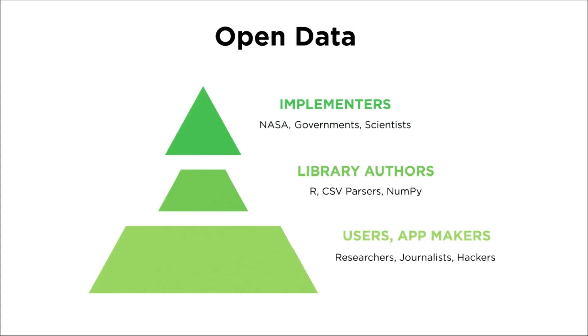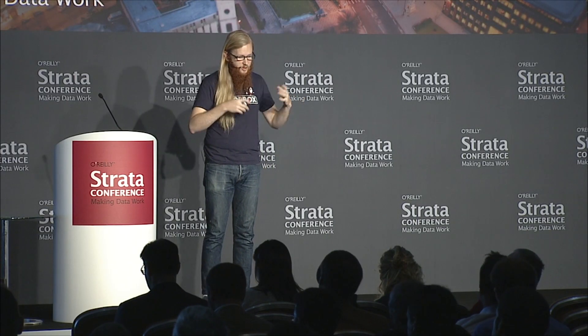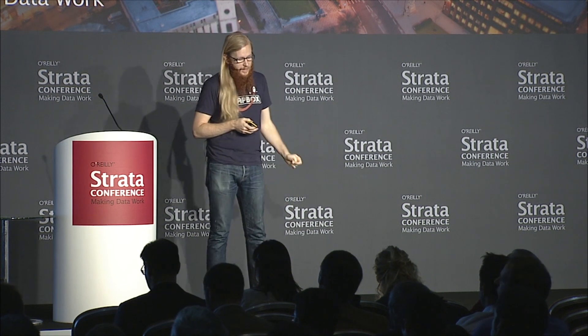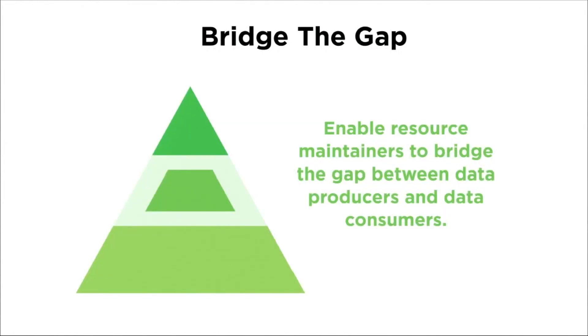In open data, we have the same stratification. At the top are the implementers — people flying satellites, collecting imagery, government agencies collecting traffic data, or scientists doing research — who have data in a raw format. At the bottom, people like data journalists, researchers, and civic hackers don't want to learn NASA formats at a low level; they just want CSV, JSON, or a SQL database to query. In the middle we have tools like R, CSV parsers, and NumPy, but we need better tools to bridge the gap because there's an imbalance.